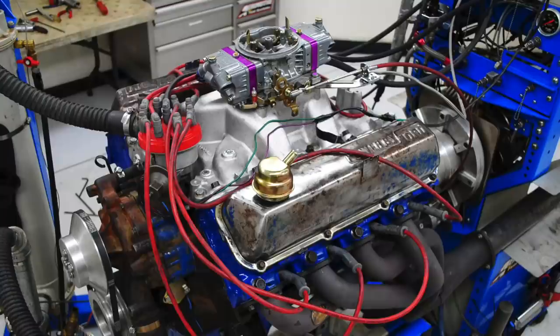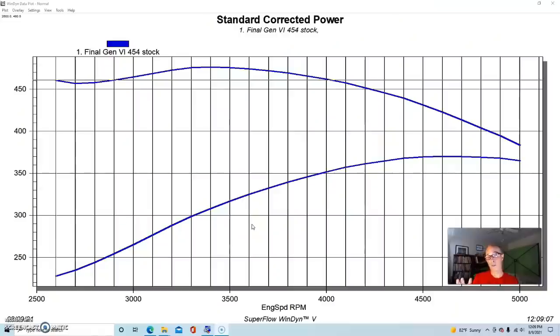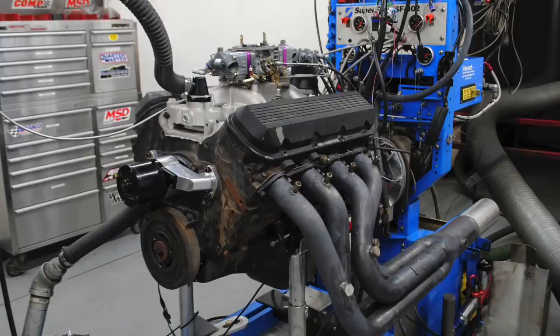Now we've taken a look at both the Gen 6 454 Chevy and the 460 Ford individually with the modifications we made to each. Obviously we have to compare them so the Ford and Chevy guys can fight it out and yell and scream at each other. This was our stock Gen 6 454 from the wrecking yard - it had an RPM Air Gap, a Holley carburetor, long tube headers, and obviously a distributor optimized tune so that it made the most power.